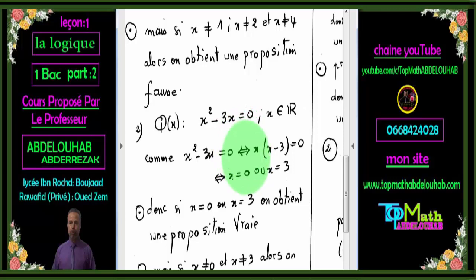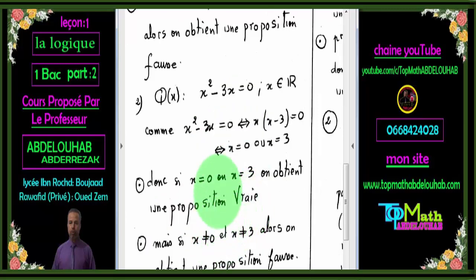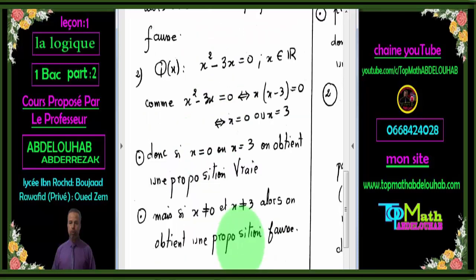Remarque : le symbole « ⟺ » représente l'équivalence, utilisé ici pour simplifier l'écriture. Donc les solutions sont x=0 ou x=3. Si on remplace dans cet énoncé mathématique x par 0 ou par 3, on obtient des propositions vraies. Par contre, si on s'éloigne de 0 et 3, par exemple x=5, 5 n'est pas une solution, donc Q(5) sera une proposition fausse.